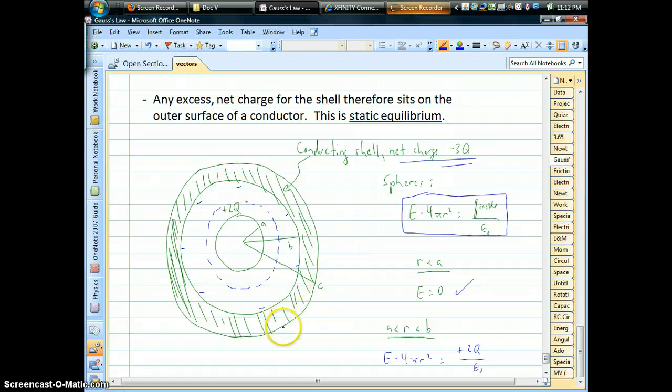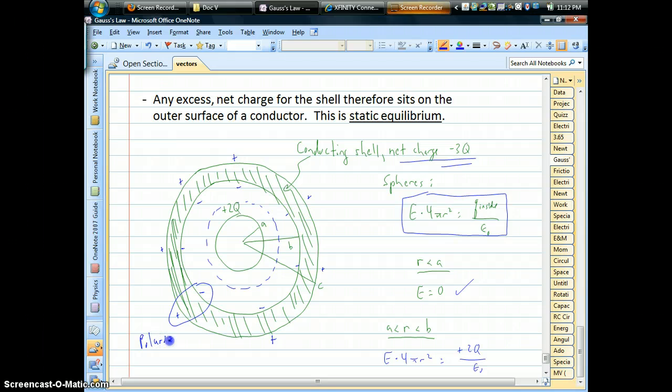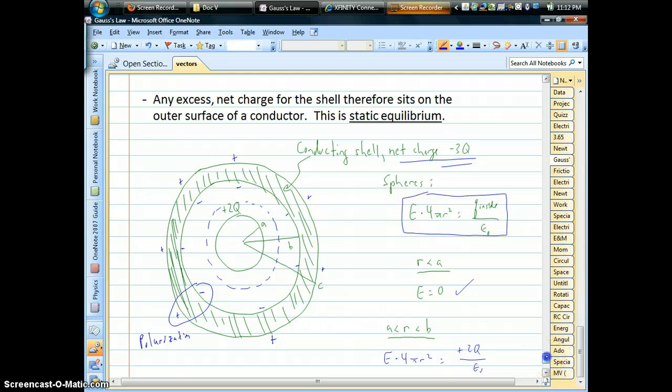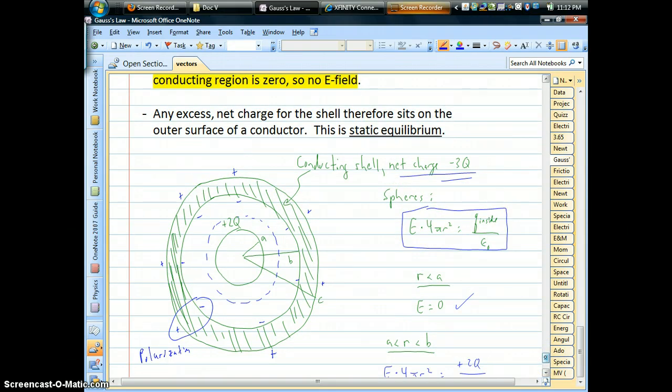And as this thing polarizes, as those electrons leave, you'll end up with a net positive charge due to the polarization on the outer shell. So all these pairs, plus minus pairs, that's the polarization that happens. That's going to happen no matter what whenever you have a picture like this with conductors.